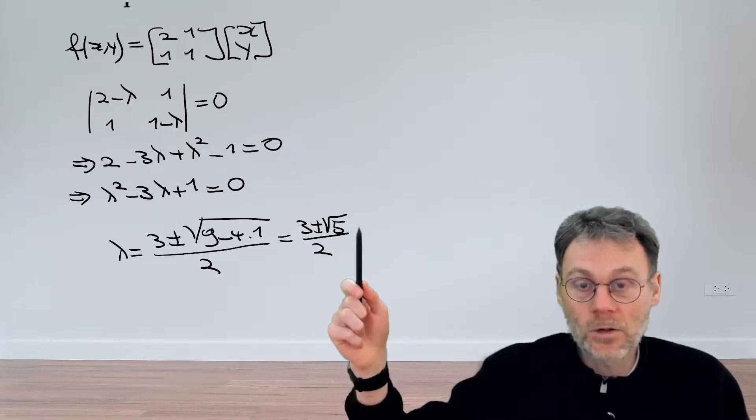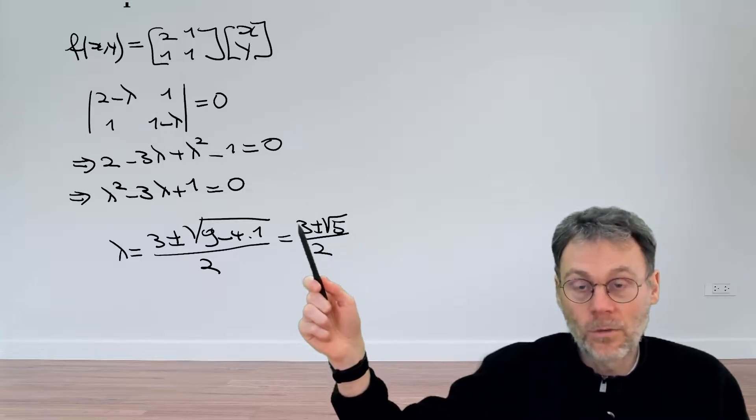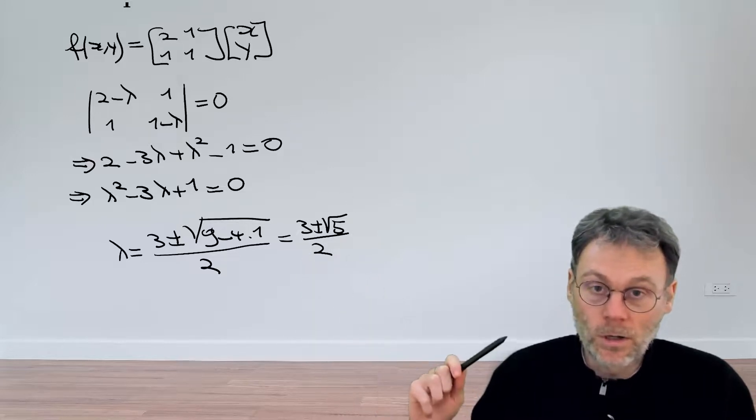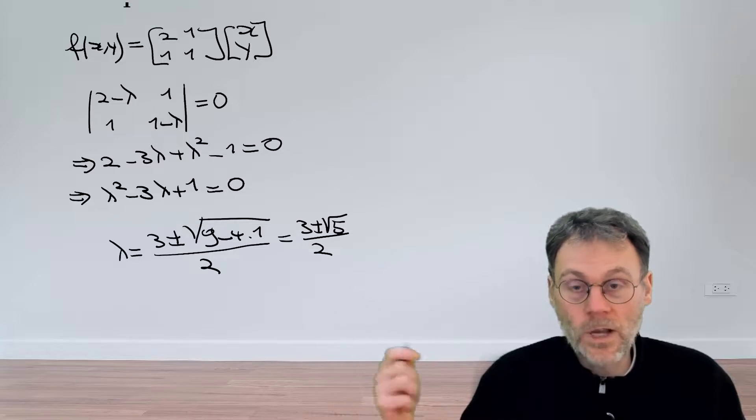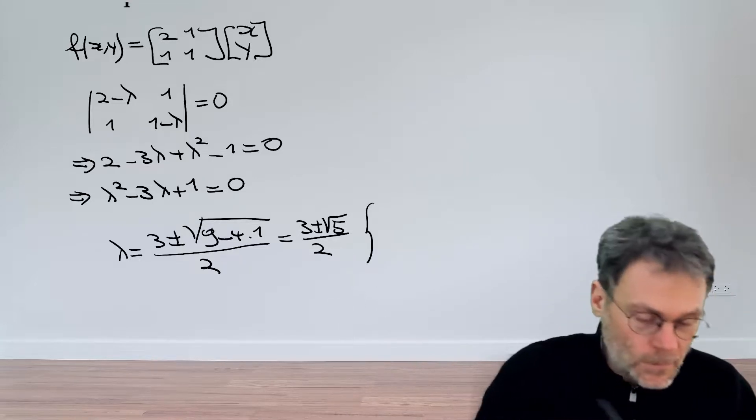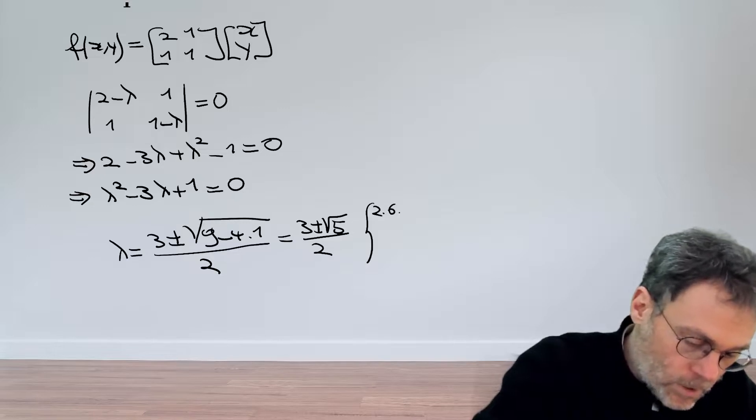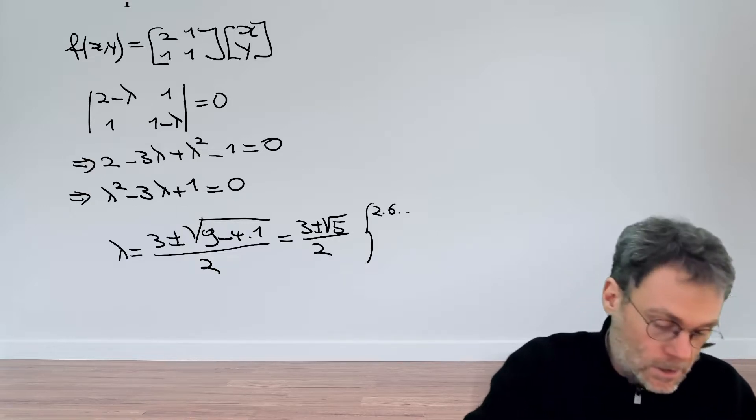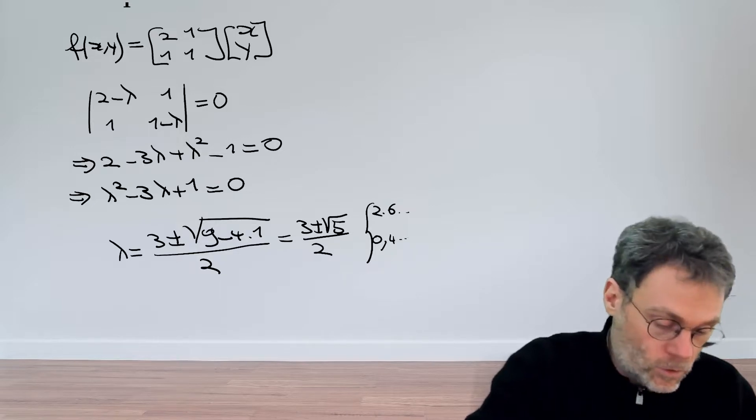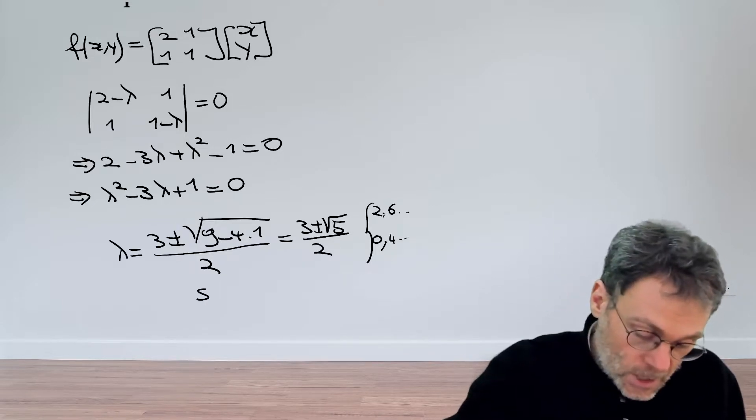So if we have a minus sign here and we subtract that from 3, then we will end up with a value which is smaller than 1. So one of the eigenvalues will be bigger than 1, one will be smaller than 1. And that's also confirmed by calculating numerically exactly: one is 2.6 something, the other one is 0.4 something. The conclusion is still the same.